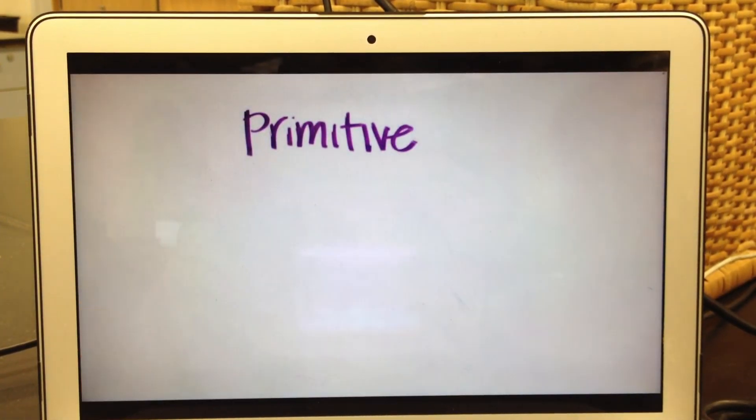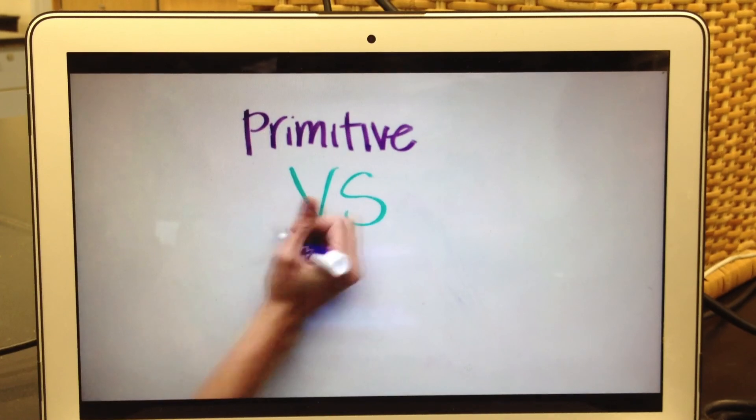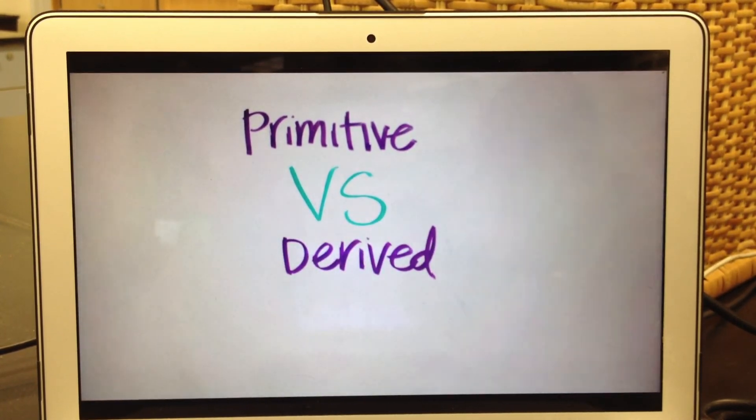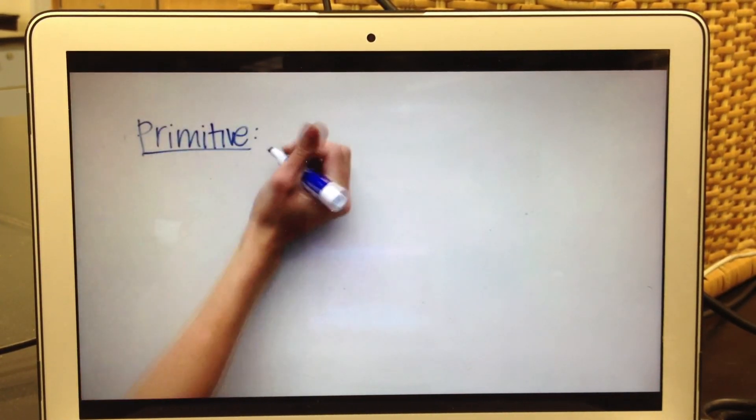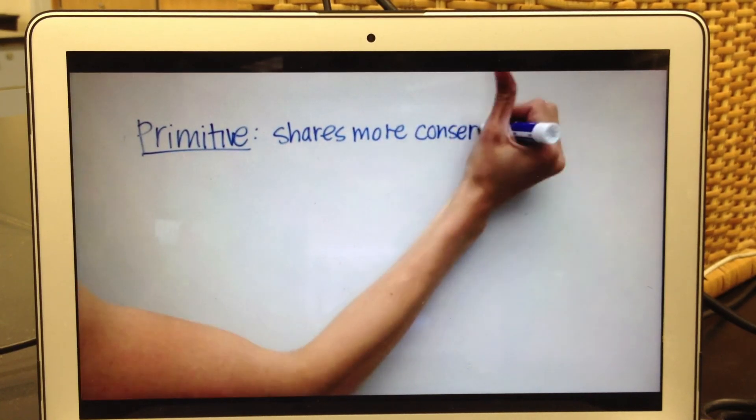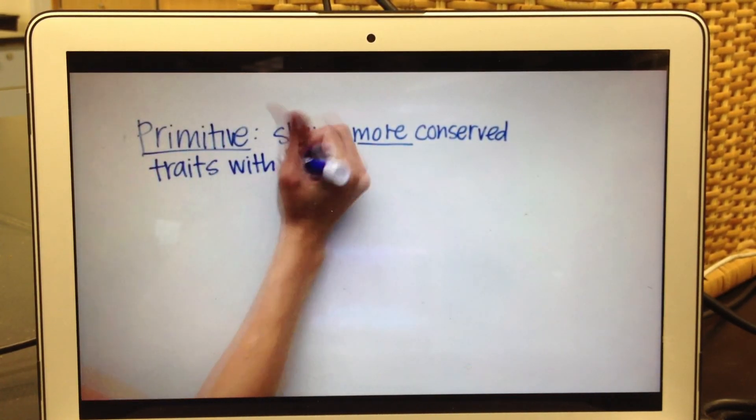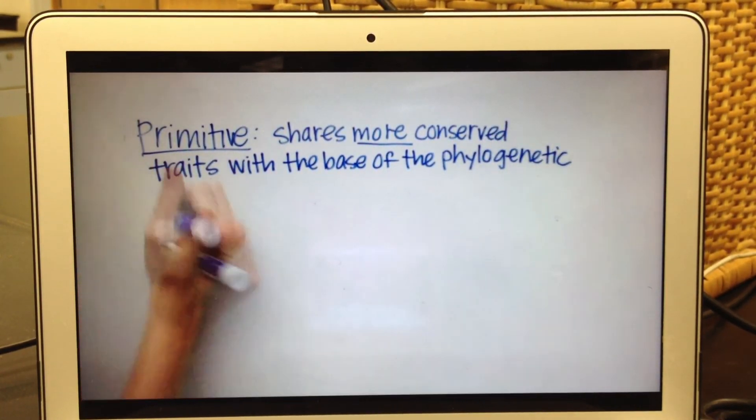So now, what's the difference between primitive and derived fishes? Well, let's start with the meaning of primitive versus derived. Primitive species is a species that is most closely related to its ancestor. So it shares more conserved traits with the base of the phylogenetic tree.